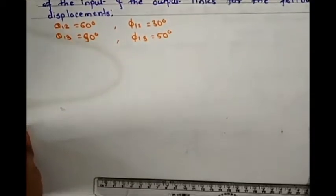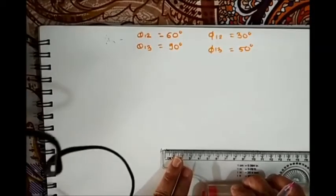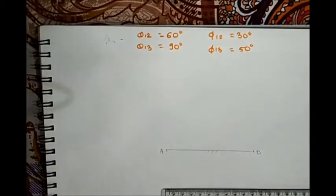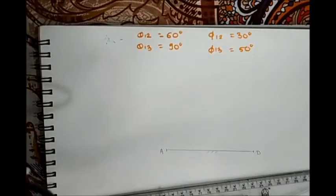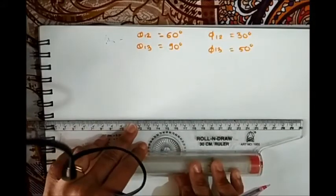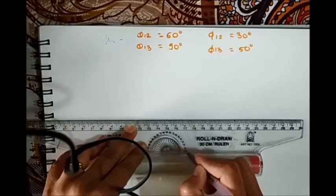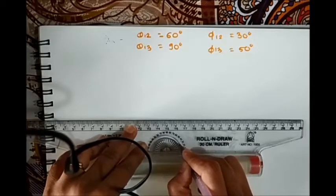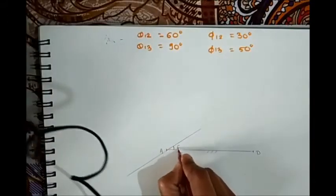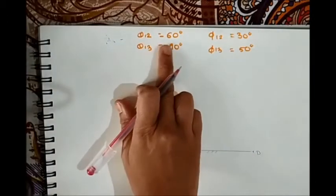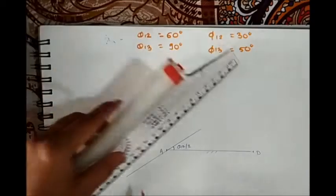Let's start by constructing fixed link AD, taking length equal to 10 mm or one unit. Next, rotate fixed link AD through an angle of 30° at point A. This angle is θ12/2, so we rotate AD through θ12/2 and extend it.